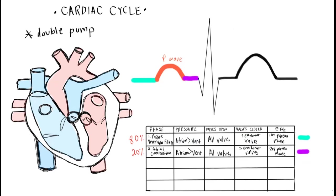The next phase is isovolumetric ventricular contraction. At this phase, neither the atriums nor the ventricles are contracting — it is the beginning of ventricular depolarization. There is a buildup of pressure in the ventricles, which causes a backflow of blood leading to the closing of the AV valves. Both the AV valves and the semilunar valves are now closed. This phase is shown within the QRS complex of the EKG, specifically at the R peak.